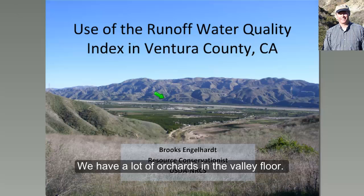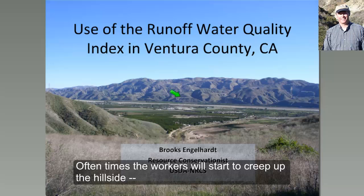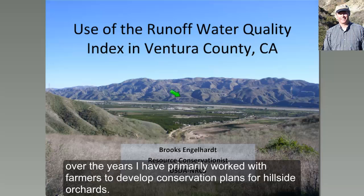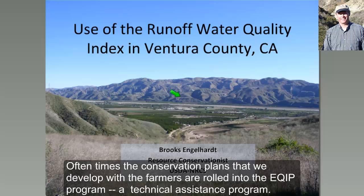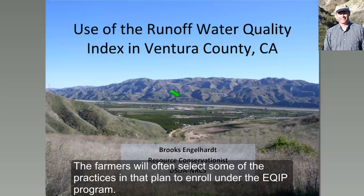We have a lot of orchards — in this case here on the valley floor — and oftentimes orchards will start creeping up the hillsides. Over the years, I've primarily worked with farmers to develop conservation plans for hillside orchards, and their primary concern is usually controlling concentrated forms of soil erosion. The conservation plans we develop with farmers are often enrolled into the Environmental Quality Incentives Program, a cost share and technical assistance program through the Farm Bill.